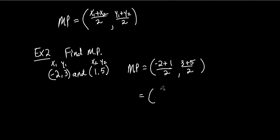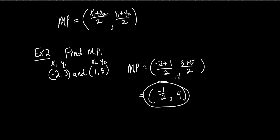And there it is — that's the midpoint: negative one half, four. Your midpoint must be written as an ordered pair, or it doesn't make sense. If you just put a number, that doesn't make sense for a midpoint. You've got to have an ordered pair — parentheses, comma, this is your X, this is your Y. It's pretty easy.